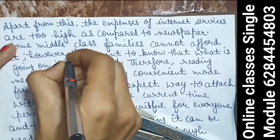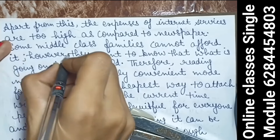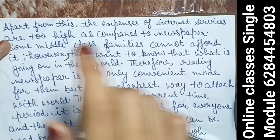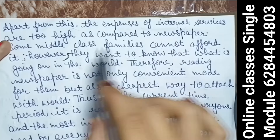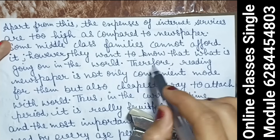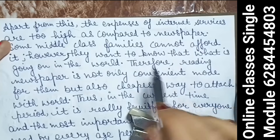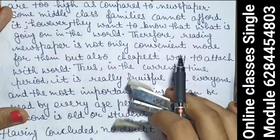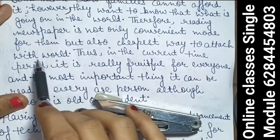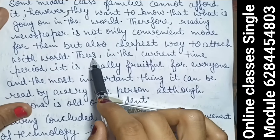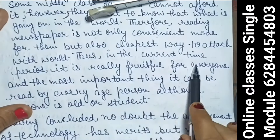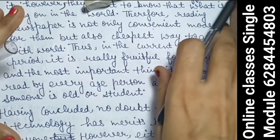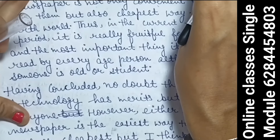However, they want to know what is going on in the world. Therefore, reading the newspaper is not only a convenient mode to get news but also the cheapest way — a newspaper costs only 3-4 rupees. The newspaper keeps you attached to the world, and the most important thing: it can be read by every age person — a great passive construction that impresses the examiner.